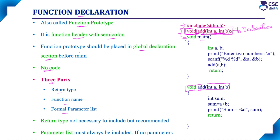All these rules applicable to identifiers are also applicable to function names. At the end of the function declaration we must specify a semicolon. Regarding return type, it is not compulsory to include, but it is recommended. If you do not specify the return data type, it will not raise an error, but it is recommended for clarity.